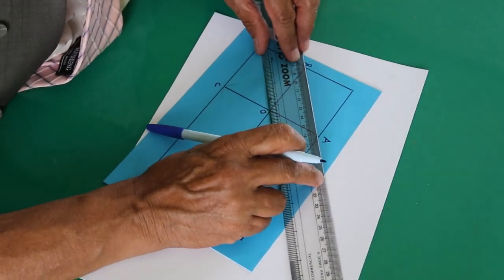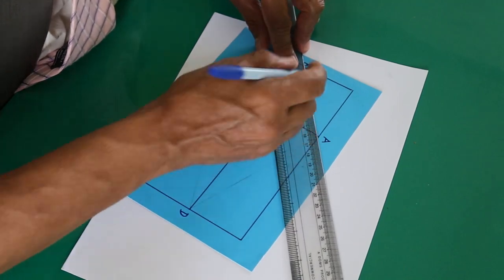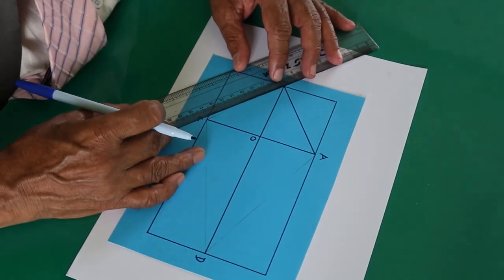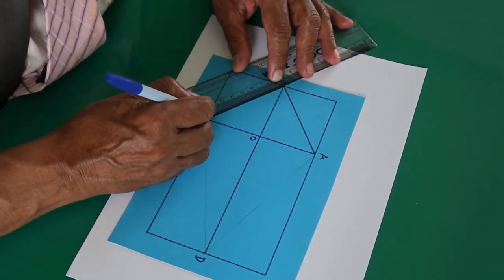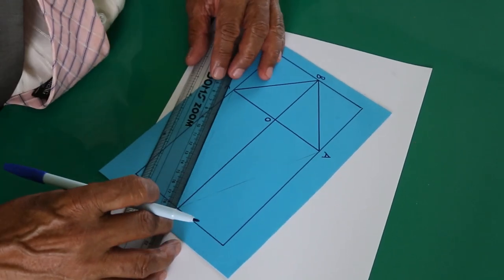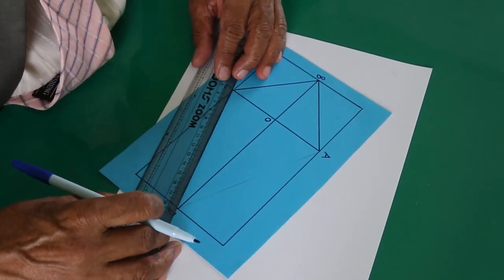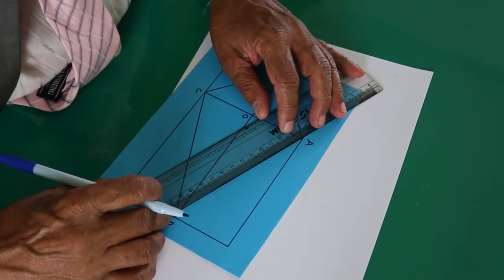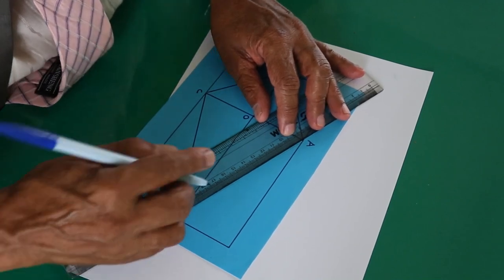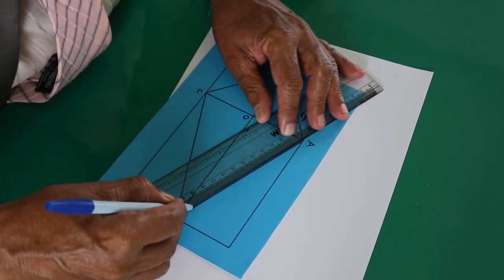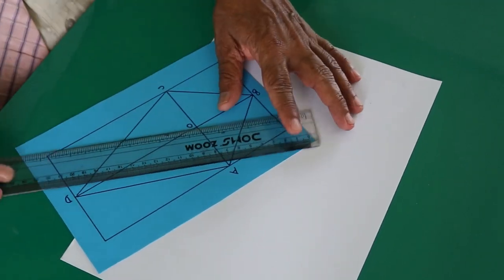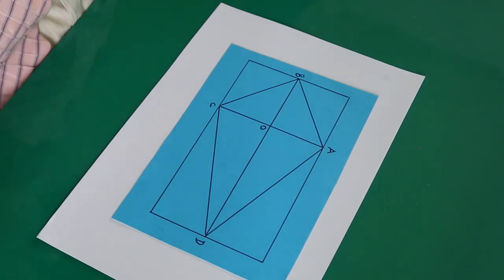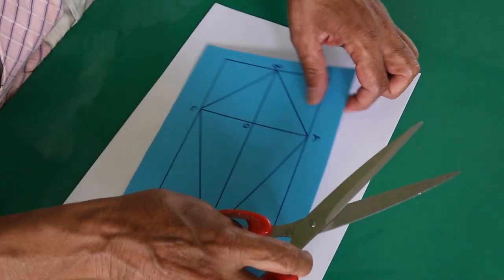Join these vertices in order and you will get a kite. This is the kite. Take out the scissors and cut out the kite.